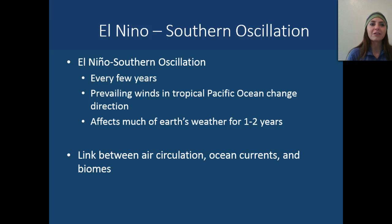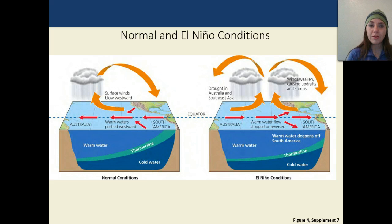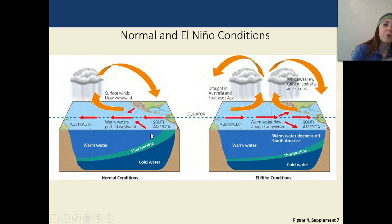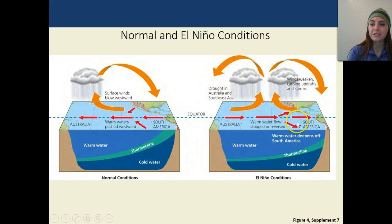You may have heard of El Niño, also called the southern oscillation. El Niño happens every couple of years when prevailing winds in the tropical Pacific Ocean change direction. This affects much of Earth's weather for about one to two years, with a link between air circulation, ocean currents, and biomes. A diagram comparing normal conditions to an El Niño year shows that during El Niño, the warm waters are disrupted, you start seeing droughts in Australia and Southeast Asia, and two different cycles of winds occur — leading to more storms and abnormal conditions.